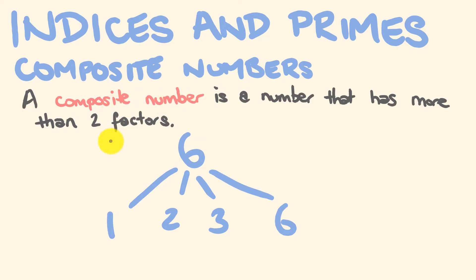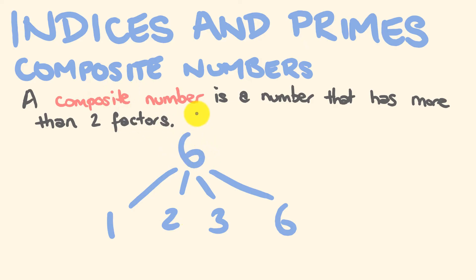You can also look at it this way: 6 is an even number that's not 2, and we straight away know that 2 is going to go into it. So we can use that clue to know that 6 is going to be a composite number.